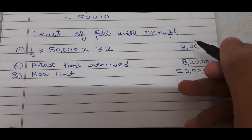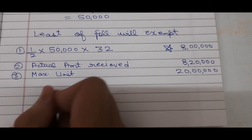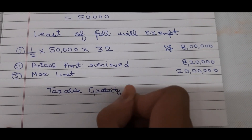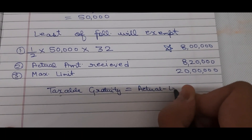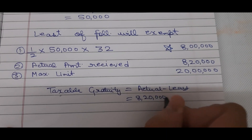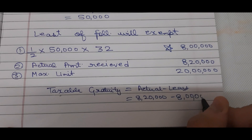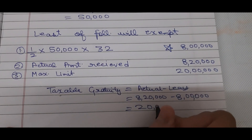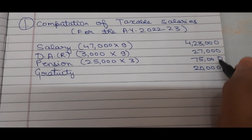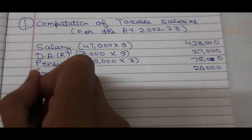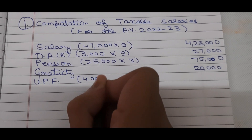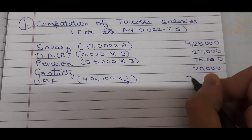The least of those three is 8,00,000 rupees, so that amount is exempt. Taxable gratuity = actual minus least = 8,20,000 minus 8,00,000 = 20,000 rupees. After gratuity, the question mentions unrecognized provident fund. We take 50% of it. The amount is 4,00,000 rupees, so half = 2,00,000 rupees is taxable.